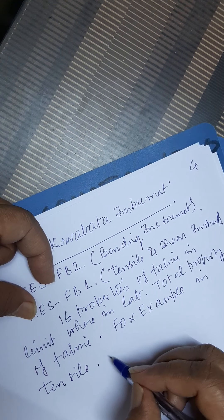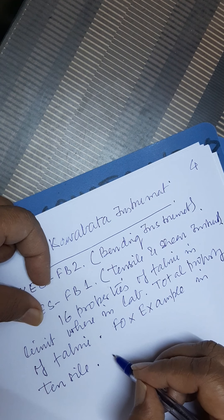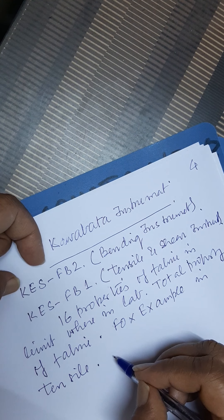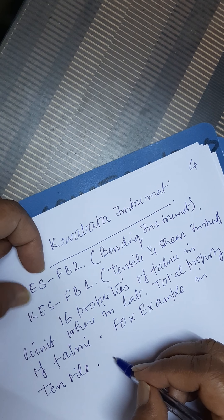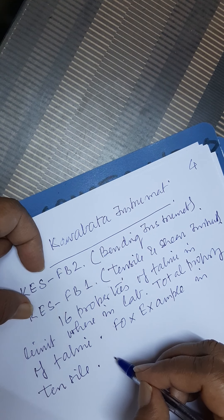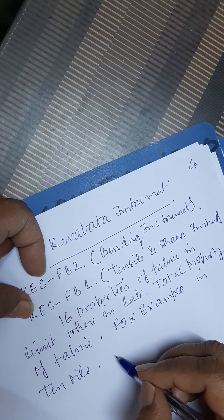For example, in standard testing we study the total tensile strength and elongation of the fabric, whereas in the KESFB1 tensile instrument we study within a particular limit. That limit is defined because in fabric we don't require the total tensile, total shear, total bending, or total friction coefficient.